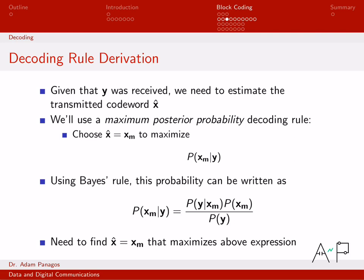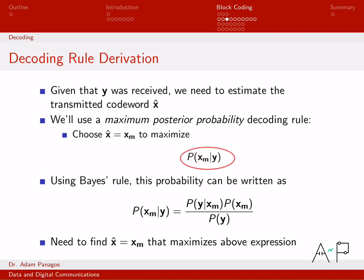We're going to propose a maximum posterior probability decoding rule. We choose our estimate as the codeword that maximizes P(XM|Y) — given that I've observed Y, what's the probability that XM was sent? You could compute this posterior probability for all codewords and pick the biggest one. I saw Y — what is the most likely codeword given my observation? That's exactly what the maximum posterior probability rule is.